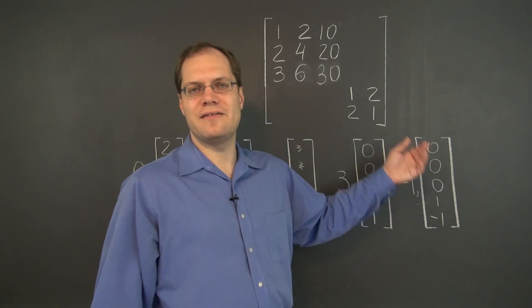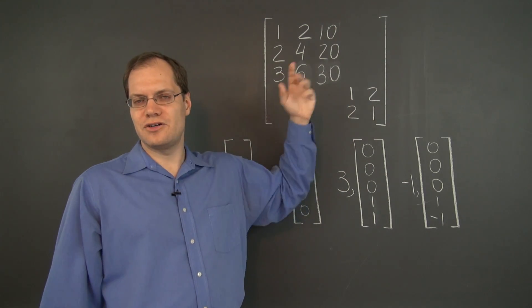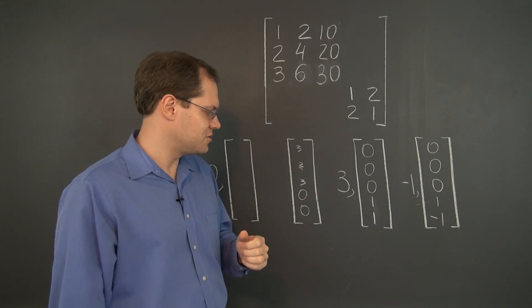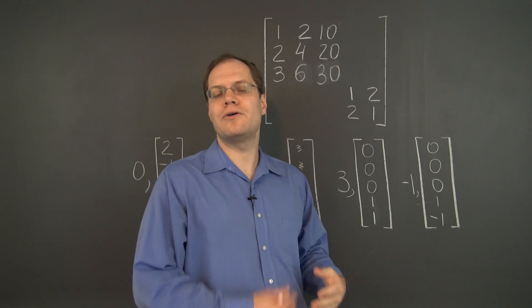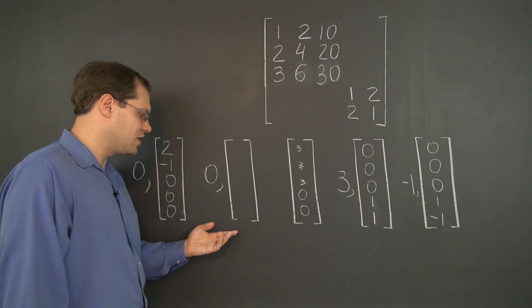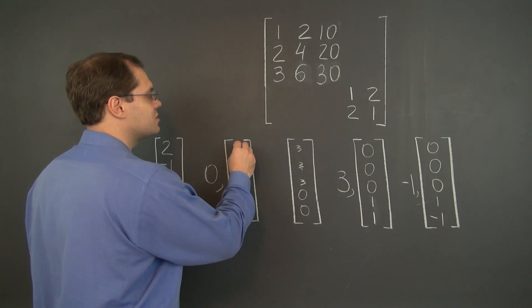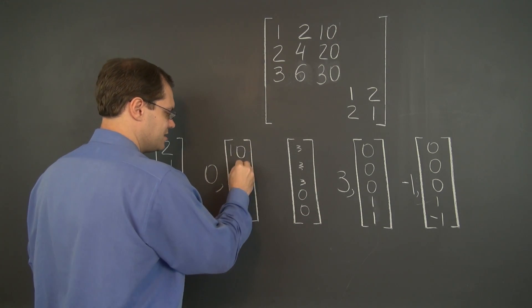And now you have a bona fide eigenvector of the larger five by five matrix. So I can see that from this part of the matrix how the whole thing works. It was a little bit harder to see with the zeros, but now we understand how it works.